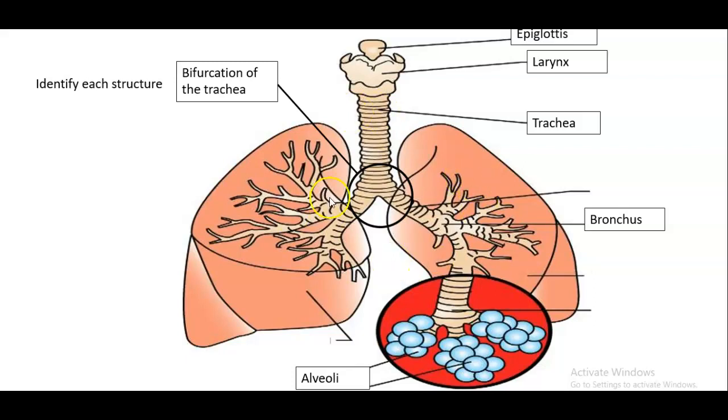And then where the trachea branches into two, that's called the bifurcation of the trachea. And then here we have a bronchus. I didn't label this left or right. This is likely the left bronchus, but this would be the left bronchus. This one would be the right bronchus. And remember when we're talking about more than one bronchus, then we use the term bronchi, but singular it's bronchus.